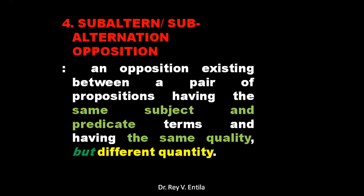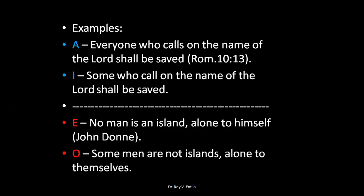A and I, E and O — affirmo and nego — are together. Examples: 'Everyone who calls on the name of the Lord shall be saved' (Romans 10:13) — universal. And its subaltern, particular: 'Some who call on the name of the Lord shall be saved.' There is really no opposition between them; their difference is only in quantity — 'everyone' versus 'some.'